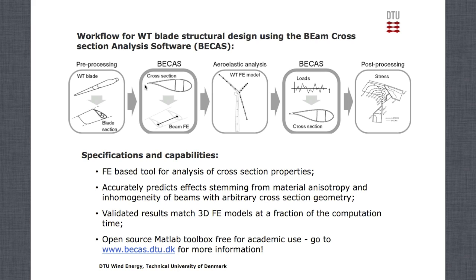The workflow we have been designing is described here in this diagram, where we start usually by having a wind turbine blade — this can be some drawings of the blade or a shell model. Based on this, you typically want to represent this blade on an aeroelastic model. So what we do is cut the blade into sections, and each of these sections is meshed using a simple 2D finite element mesh. Based on this mesh, BIKES is able to determine the cross-section stiffness and mass properties.